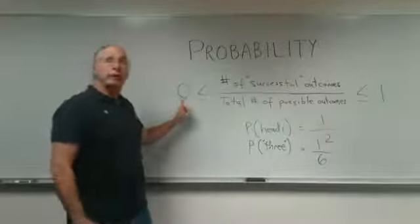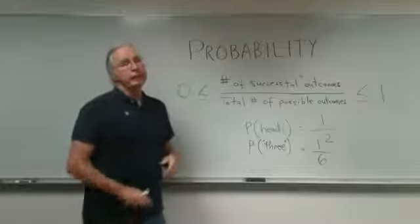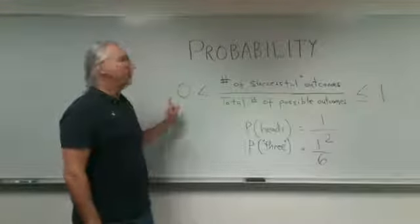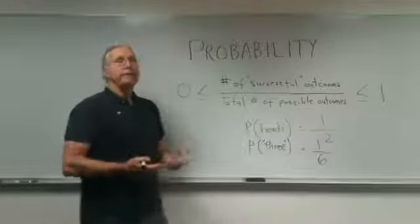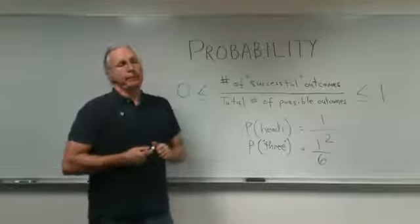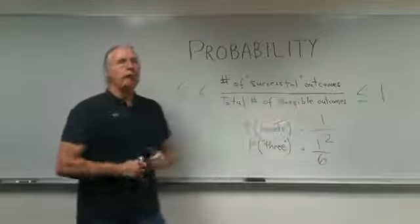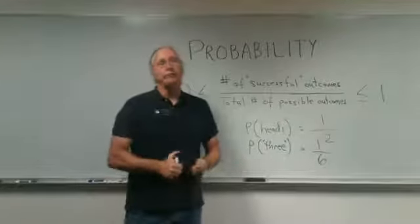Now, if a probability is equal to zero, that means it is guaranteed not to happen. It's impossible to happen. A probability that's equal to one is an event that is guaranteed. Probability is a way of expressing the relative likelihood of an event occurring.